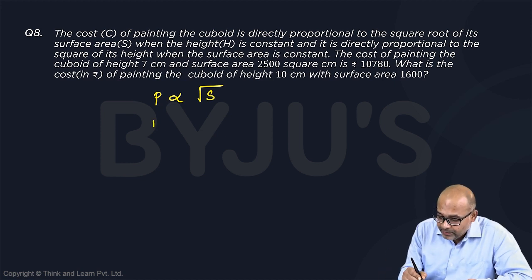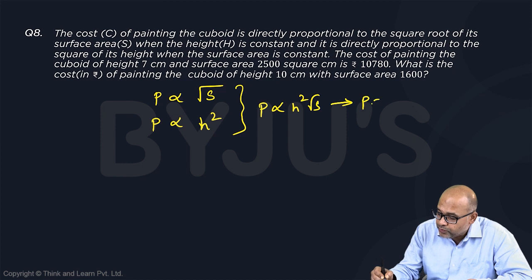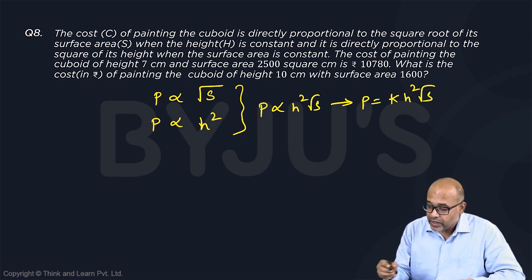When the height is constant, price is directly proportional to the square of its height. If you combine these two, you get P is proportional to h² times square root of S. This gives you P should be equal to proportionality constant k times h² times square root of S.